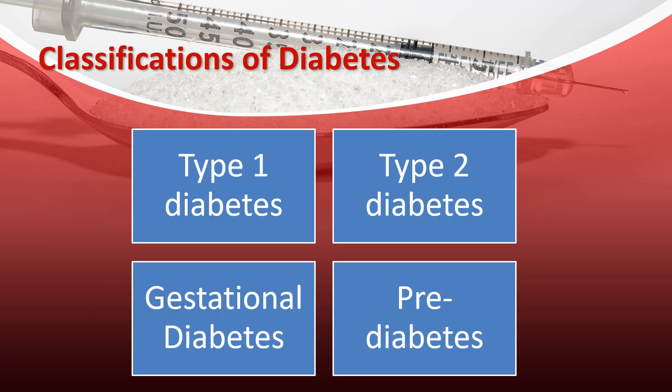There are three main types of diabetes: type 1, type 2, and gestational. Type 1 diabetes is what we used to call juvenile diabetes or insulin-dependent diabetes. Type 2 diabetes used to be called adult-onset diabetes or non-insulin-dependent diabetes. Gestational diabetes is hyperglycemia during pregnancy. Prediabetes is elevated glucose levels that are not high enough to be considered diabetes, and in people who do not get those blood glucose levels under control, it will most likely turn into diabetes.